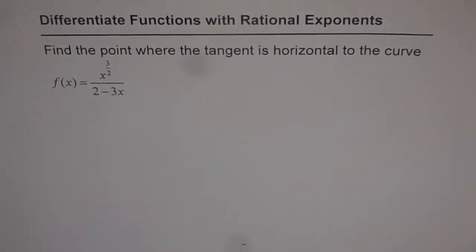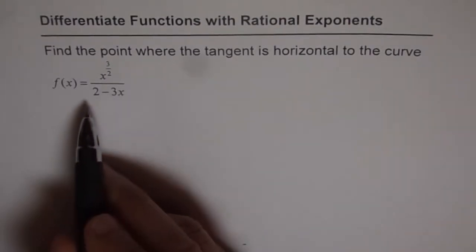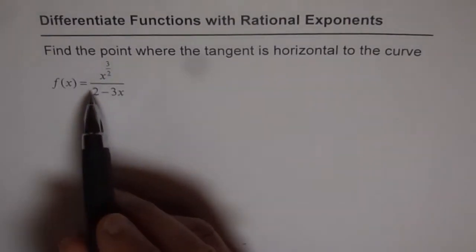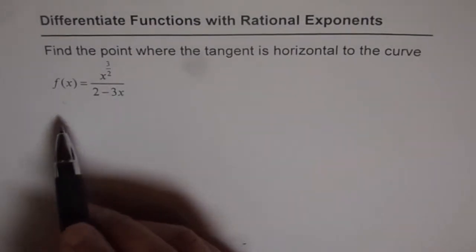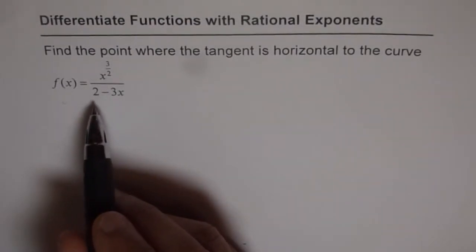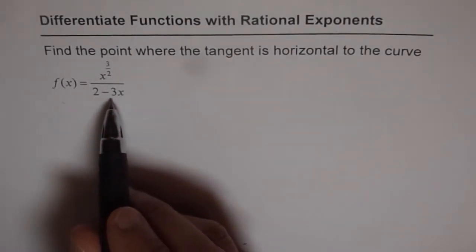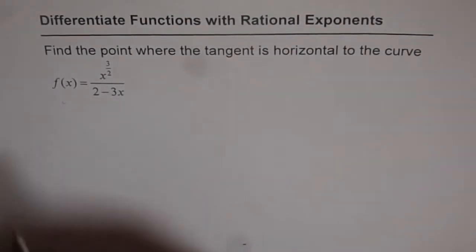Differentiate functions with rational exponents. Find the point where the tangent is horizontal to the curve f of x equals 2x to the power of 3 over 2, divided by 2 minus 3x.